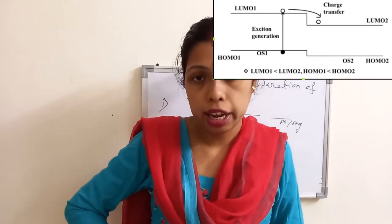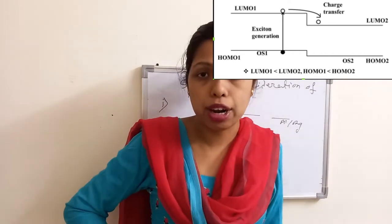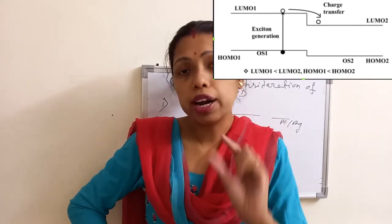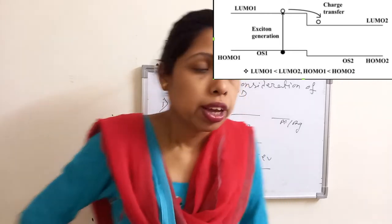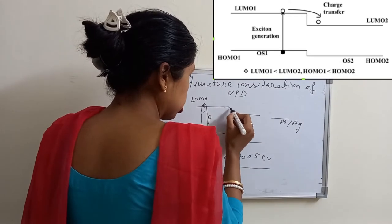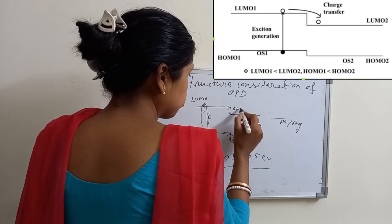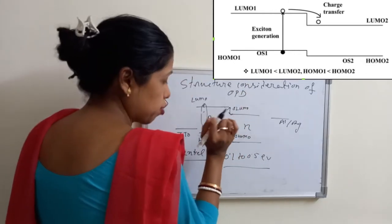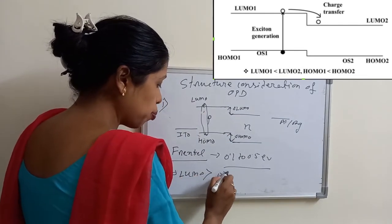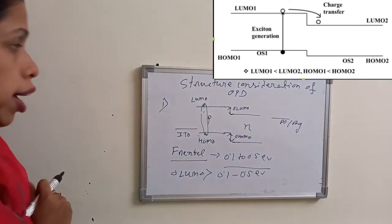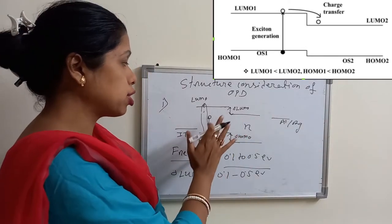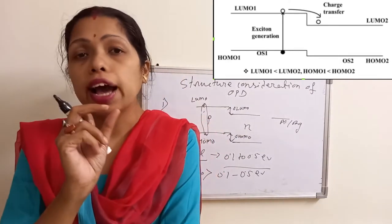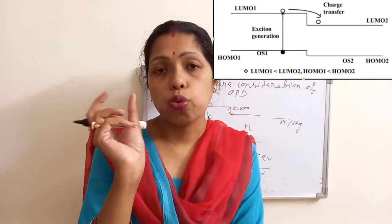To generate this internal electric field, we can use two different kinds of semiconductors. That way we will get an energetic difference — an energetic barrier at the interface. This energetic barrier helps to dissociate the excitons. But what will be the value of that energetic barrier? There are lots of P-type semiconductors and N-type semiconductors available. The energetic gap delta LUMO should be greater than 0.1 to 0.5 electron volt.